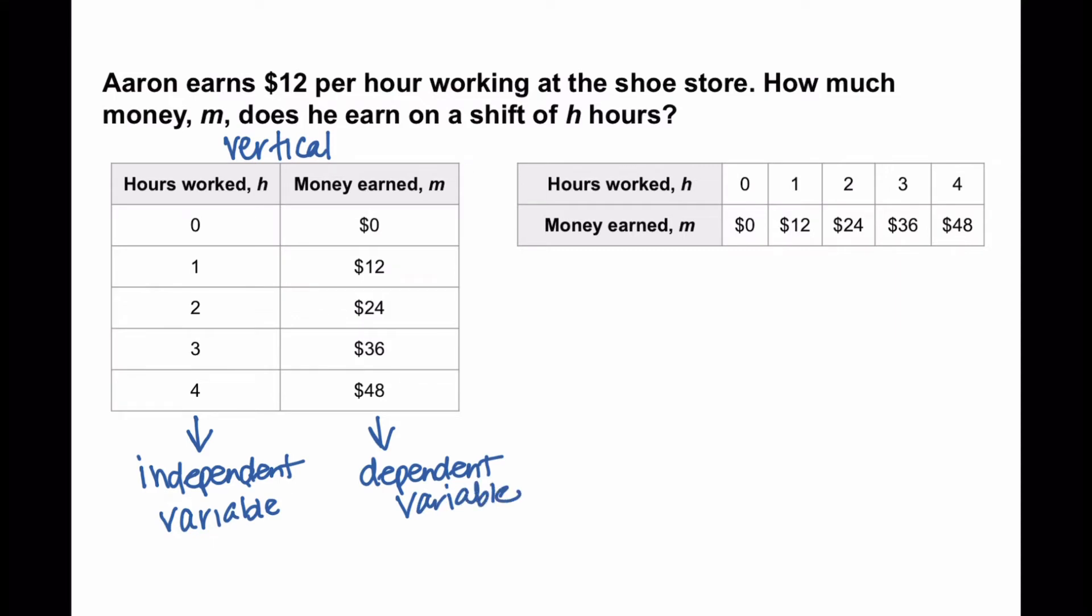In a horizontal table, the top row is your independent variable.